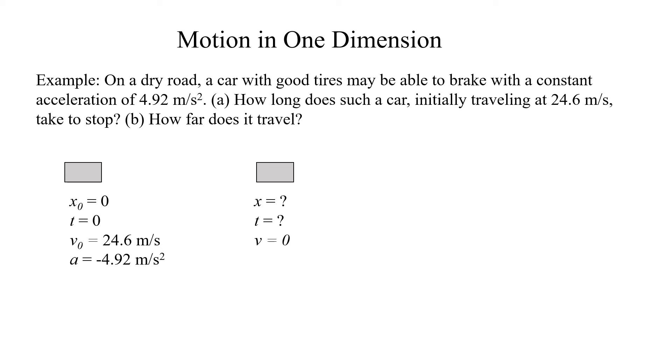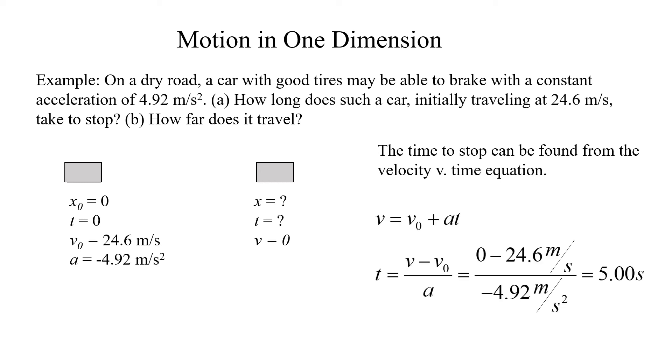So we want to find that distance and that time. Now since we know the initial velocity and the final velocity, and we know the acceleration, we can use the velocity versus time equation to get the time it takes to come to a stop. So we have v equals v naught plus at, solve for t, we get v minus v naught over a. So I have 0 for the final velocity, minus 24.6 meters per second, my initial velocity, divided by the acceleration of minus 4.92 meters per second squared, and that gives me 5 seconds. So that's how long it takes to come to a stop.